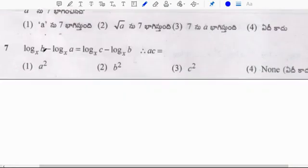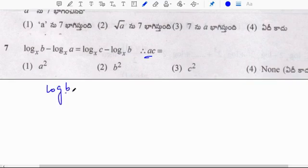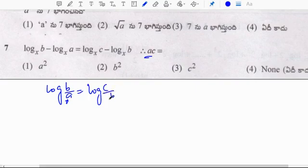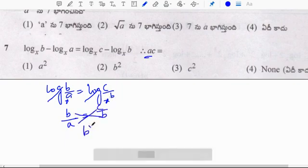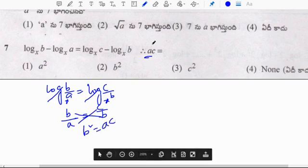Last question: log b base x minus log a base x equals log c base x minus log b base x. Using the formula log a minus log b = log(a/b), we get log(b/a) base x equals log(c/b) base x. Cancelling logarithm on both sides: b/a equals c/b. Cross multiplying: b squared equals ac. Correct option is 2.